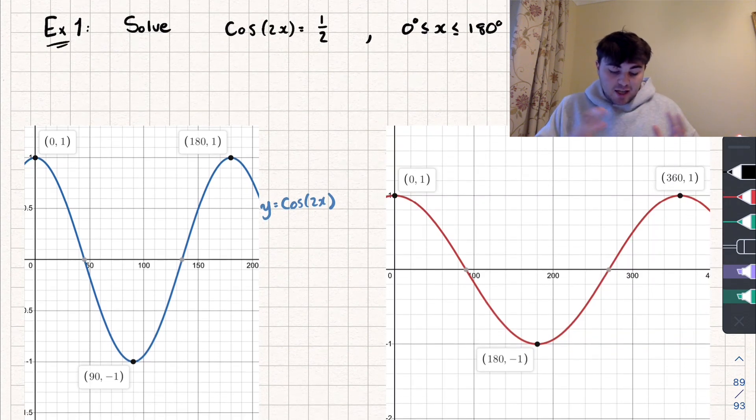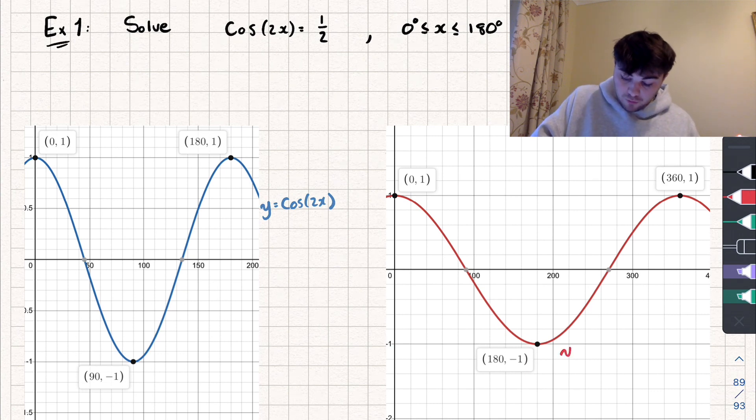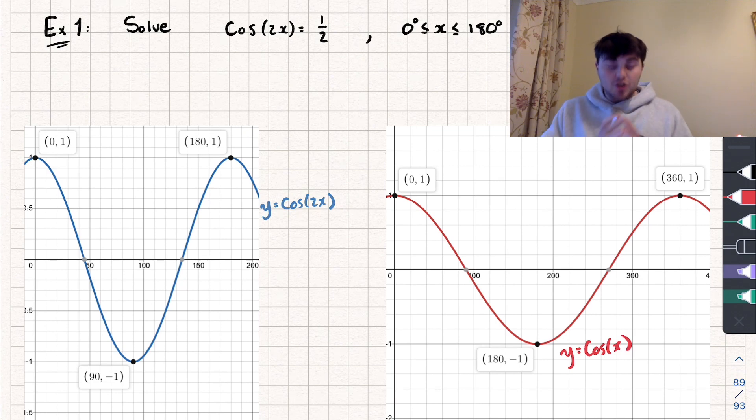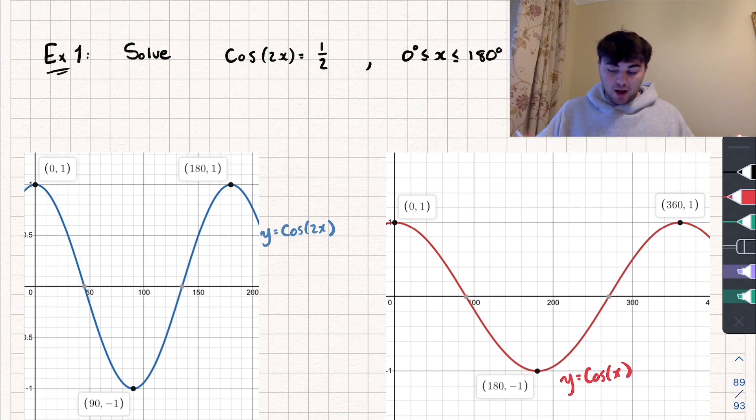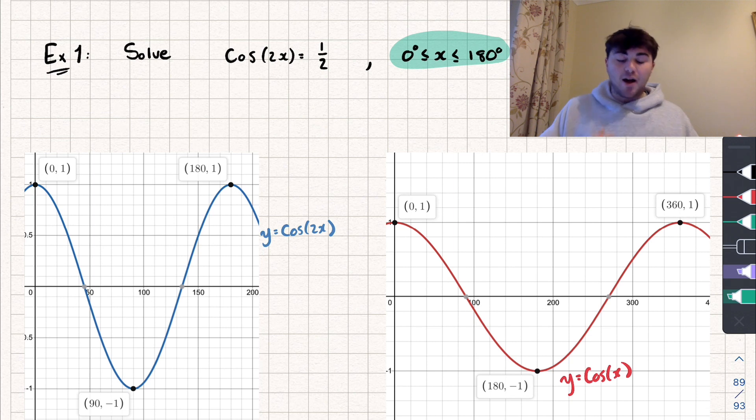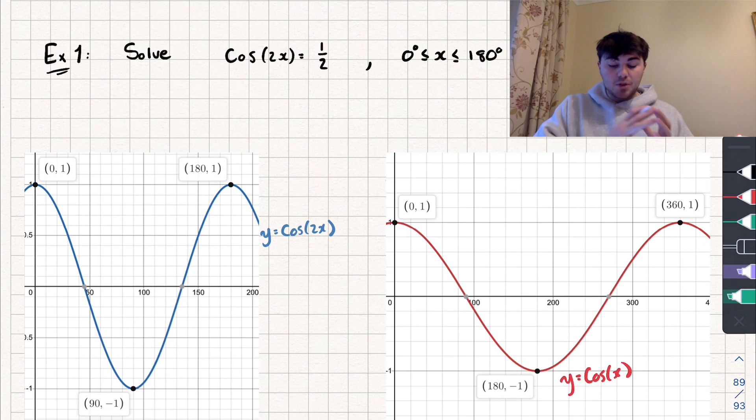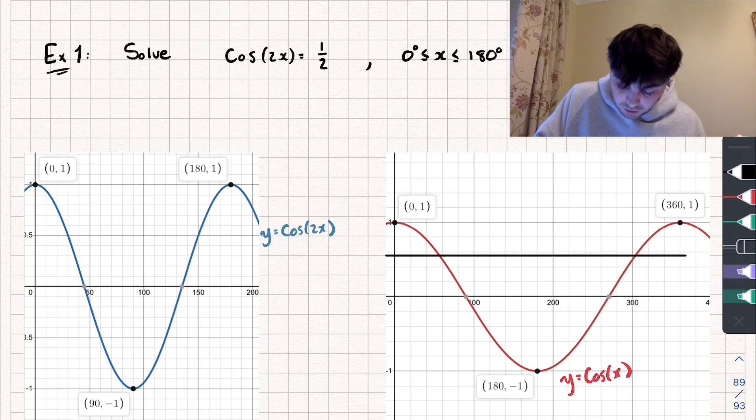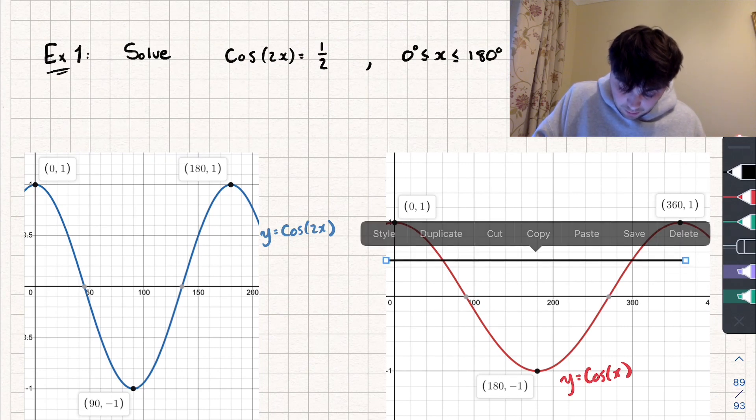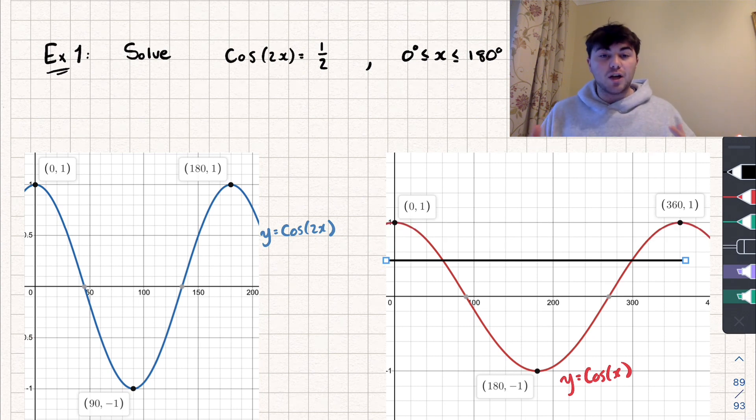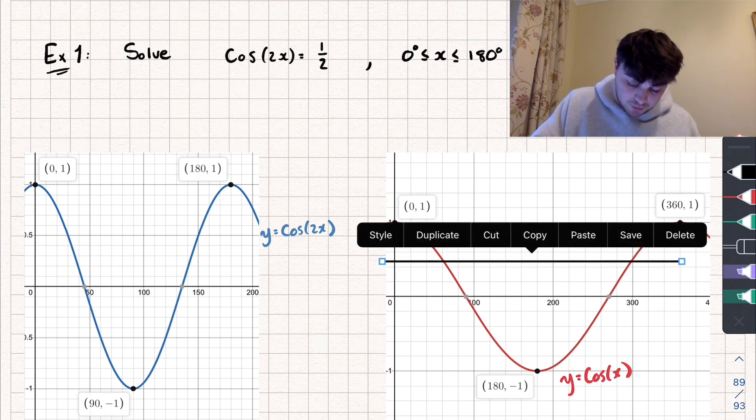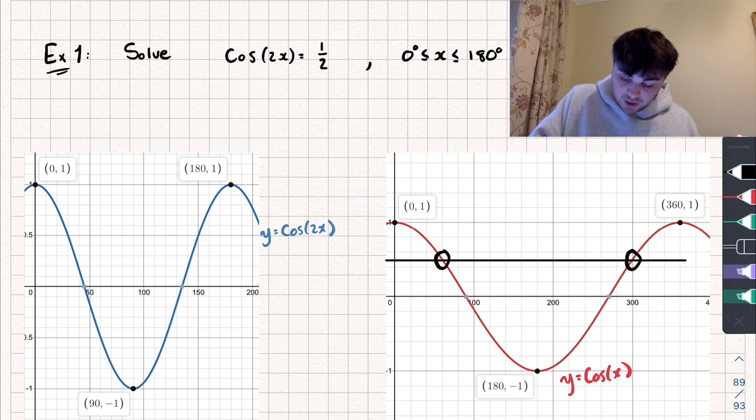So I'm going to extend this graph by 2, and I'm going to look at the normal graph of y equals cos of x. Now, like I said, because I've stretched the graph out so it's twice as long now, I'm going to extend my range of values I'm interested in by 2 as well. And so now I'm going to look at the range of values between 0 and 360 degrees. And we want to solve cos of x equals 1 half now between 0 and 360. So if I draw on a line, y equals 1 half, it's going to look something like that. And so in this range, we're going to have two solutions.